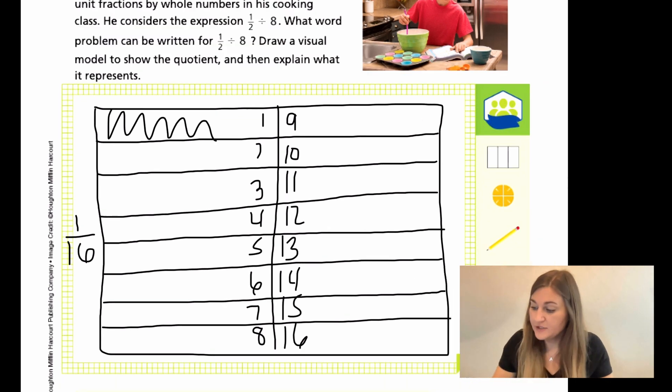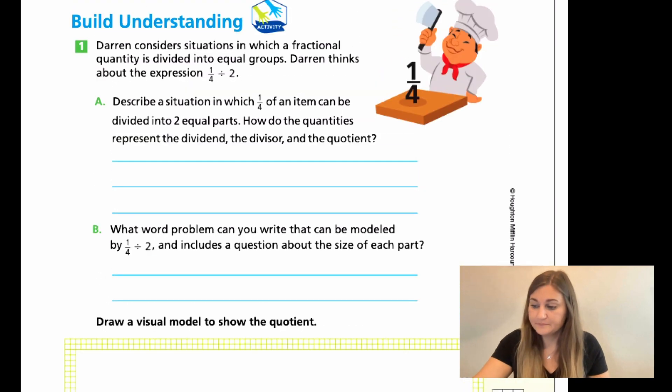All right, let's go ahead and flip the page here to page 248. Now it's going to be your turn to do this. So number one, continuing on, it says Darren considers situations in which a fractional quantity is divided into equal groups. Darren thinks about the expression 1/4 divided by 2. And it shows the little chef over here and he has 1/4, and then he has his little cleaver here. So for A, it says describe a situation in which 1/4 of an item can be divided into two equal parts. How do the quantities represent the dividend, the divisor, and the quotient?